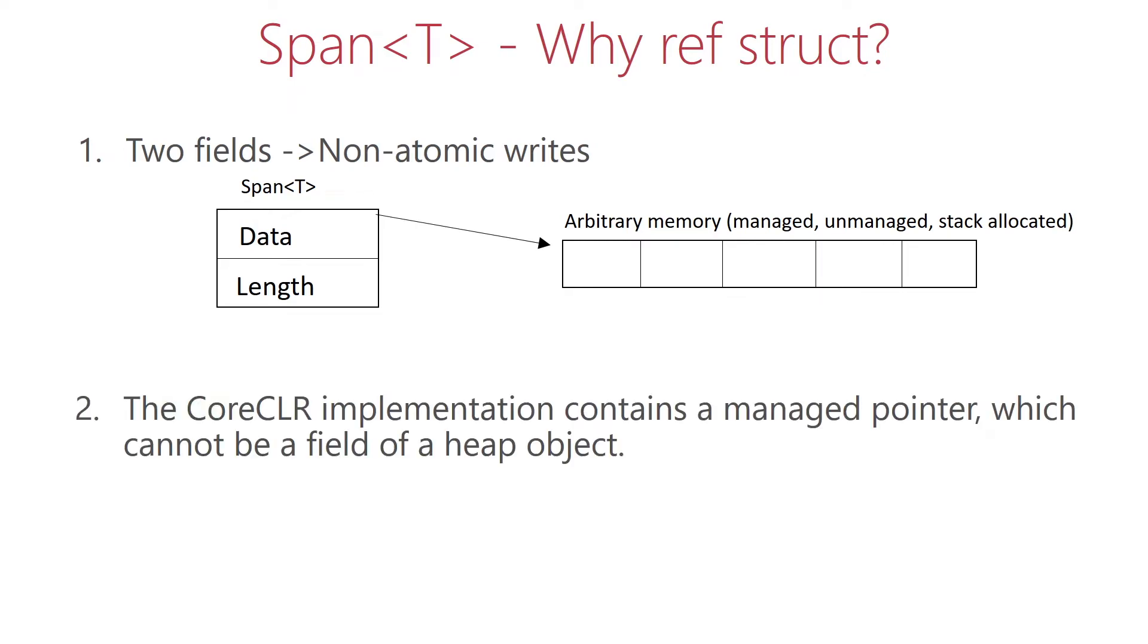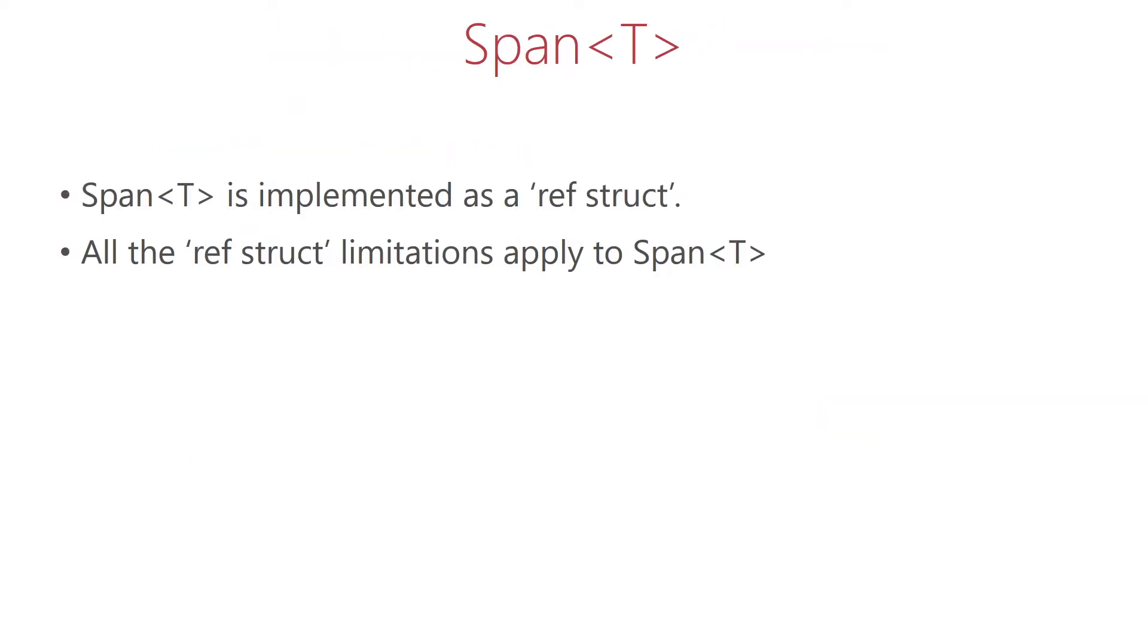The second reason is that the implementation of Span on CoreCLR contains a managed pointer in one of its fields, and those managed pointers cannot be fields of a heap object. This means that Span is implemented as a ref struct, and all the limitations that we talked about ref structs also apply to Span.